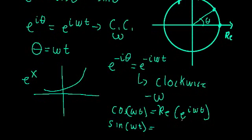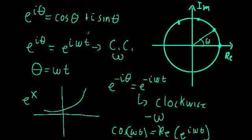Cosine is the real part and sine is the imaginary part of e to the i omega t. This is fairly obvious from Euler's formula, but it's important to think of it in terms of this exponential function as a rotation.